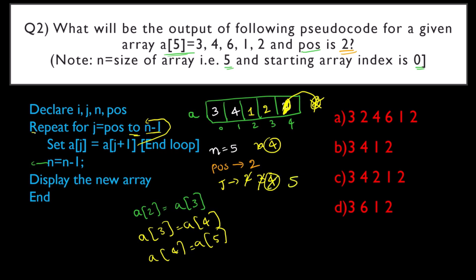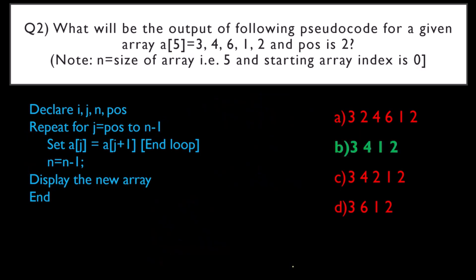It comes out of the loop and displays the new array: 3, 4, 1, 2. Option B is the correct answer — 3, 4, 1, 2.